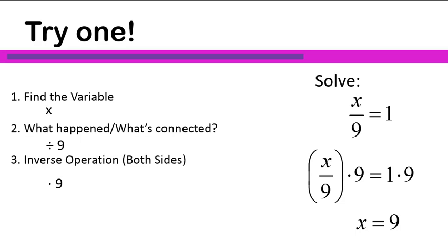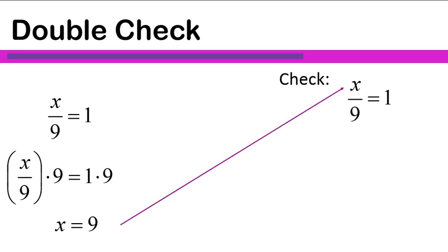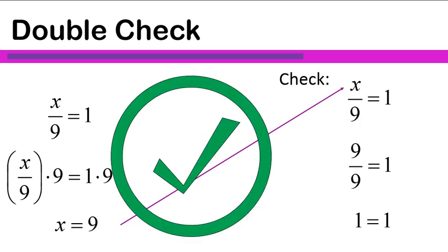When I see that many of the same number, I always check my work. So here's my equation fully solved. I'm going to substitute the answer I got, x equals 9, back into the original equation and see if it checks out. Is 9 divided by 9 equal to 1? Yes, it is. So we've checked our work, and x is equal to 9 — that's the correct answer for our final solution.